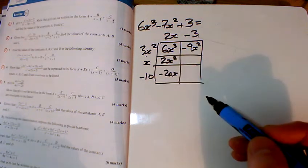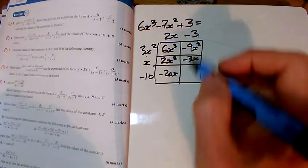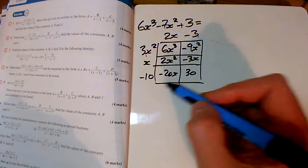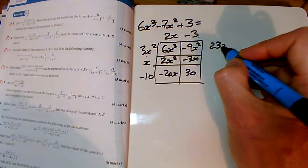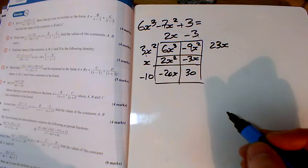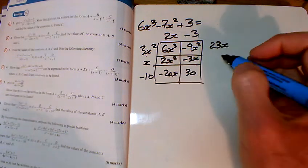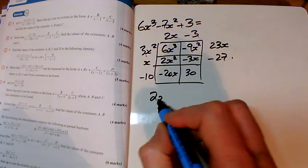-3 times 3 makes -9. That gives us -3x and also gives us +30. Here I've got 23x. I don't want any x at all, so -23 cancels with the 23x there. I've got 20 here, but I only want 3, so I've got -27. The first part is done.